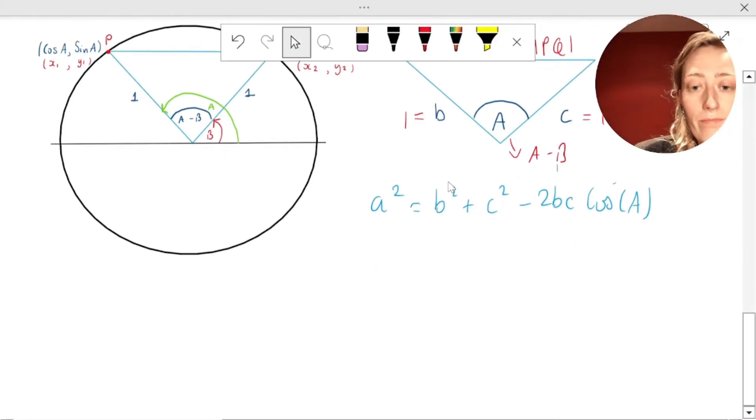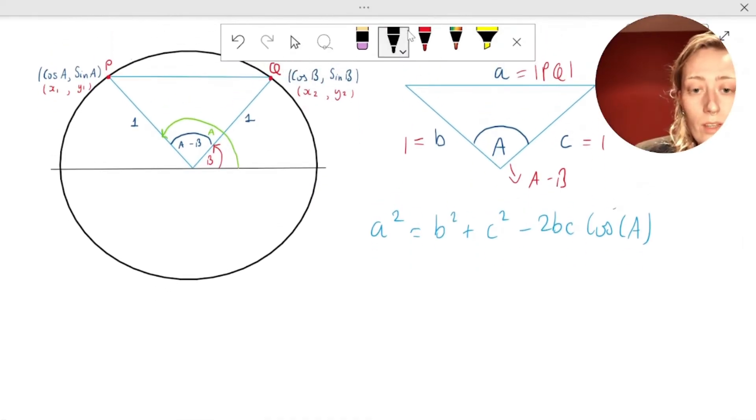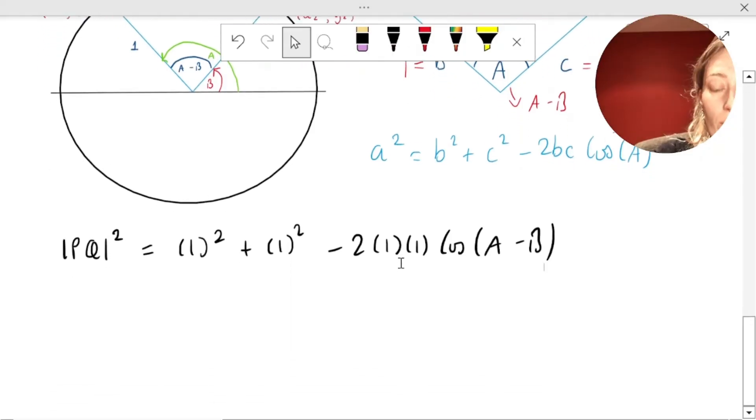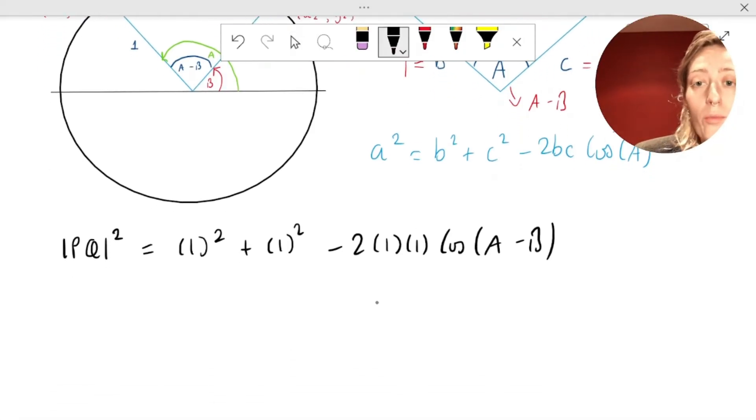So, why don't we label it with whatever labels we have here. So, A is our distance PQ. B here is just 1. C here is just 1. And our angle A here is A minus B. So, let's just sub it in. So, again, we have PQ squared, which is A squared, is equal to B squared, 1 squared plus 1 squared for C squared minus 2 by 1 by 1 cos of A minus B. 1 squared is just equal to 1, minus 2 times 1 times 1 is just minus 2. So, we have this is 2 minus 2 cos A minus B.